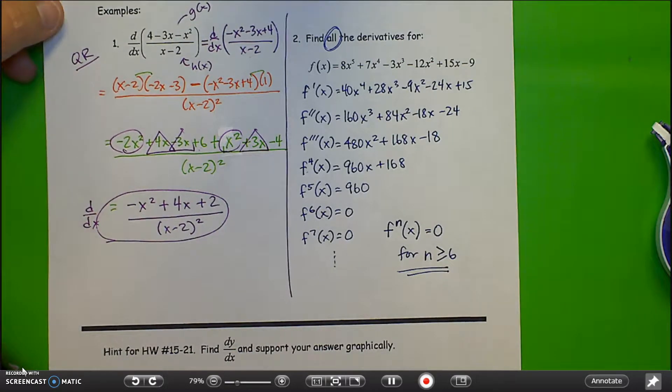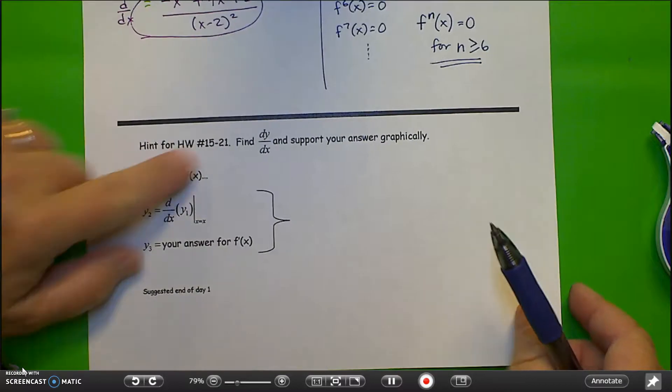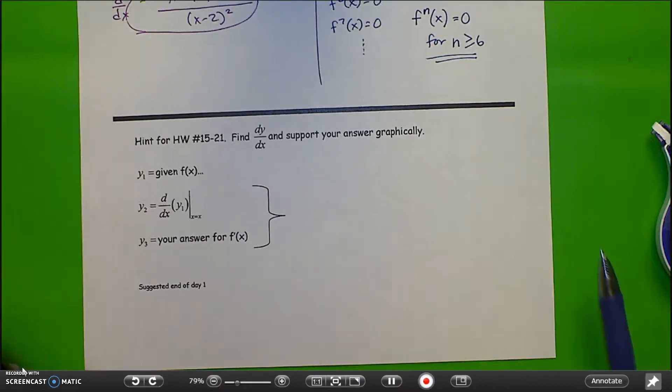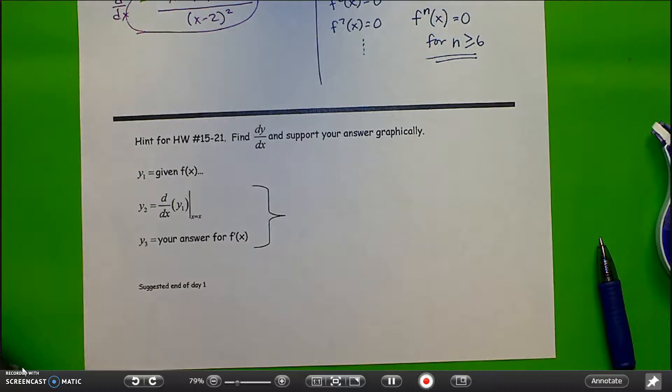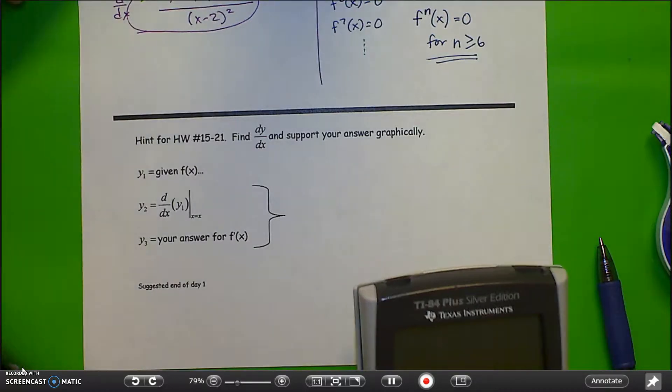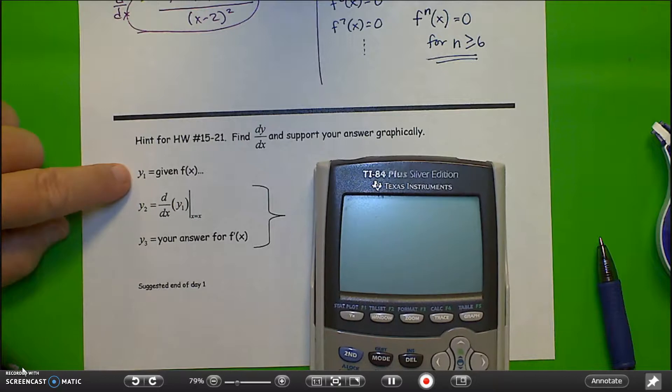Okay. Next, a hint for homework problems if you're looking in the textbook section 3.3 between problems 15 and 21, it's asking to, the instructions say find a derivative and support your answer graphically. So basically, this is just telling you that you can use your calculator to check your answers on your derivatives.